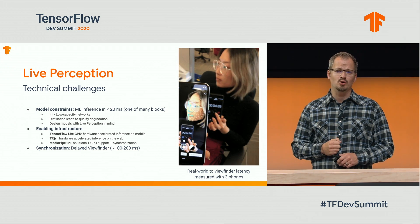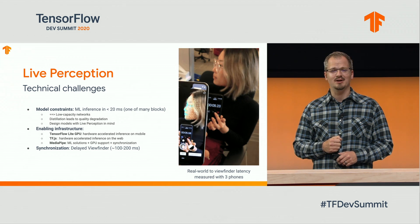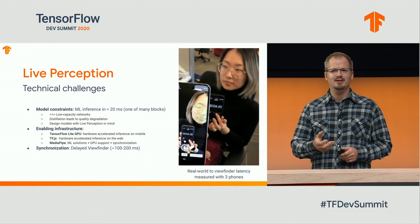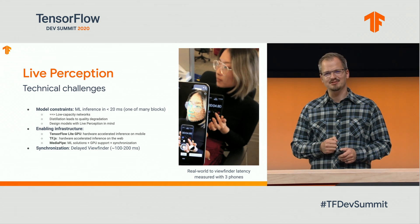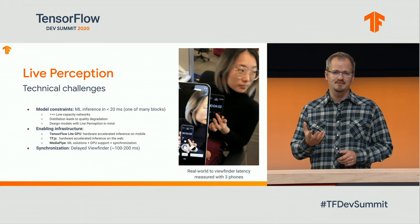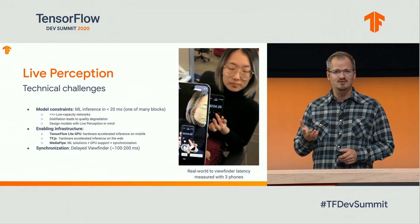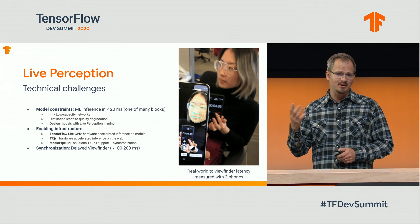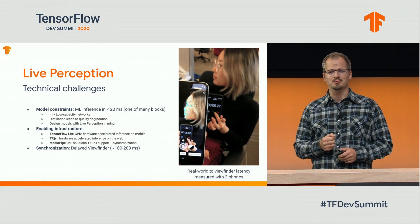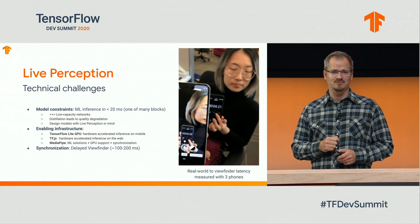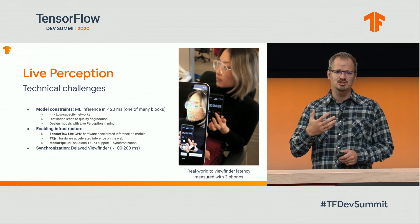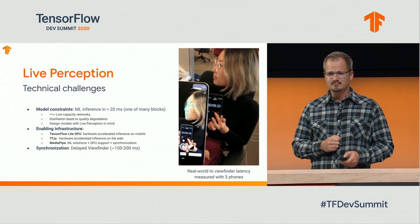In addition, there's a framework called MediaPipe, which allows us to run ML solutions — usually multiple models — directly with GPU support and synchronization support. In live perception, you do have a natural latency coming from the ML inference as well as the inherent camera pipeline latency, and this tends to add up to something like 100 to 200 milliseconds, as you can see on the GIF on the right. A framework like MediaPipe helps with synchronization and buffering to address those challenges.